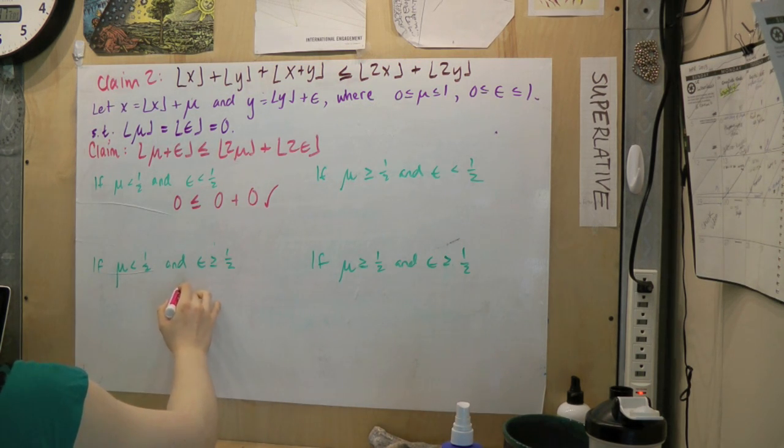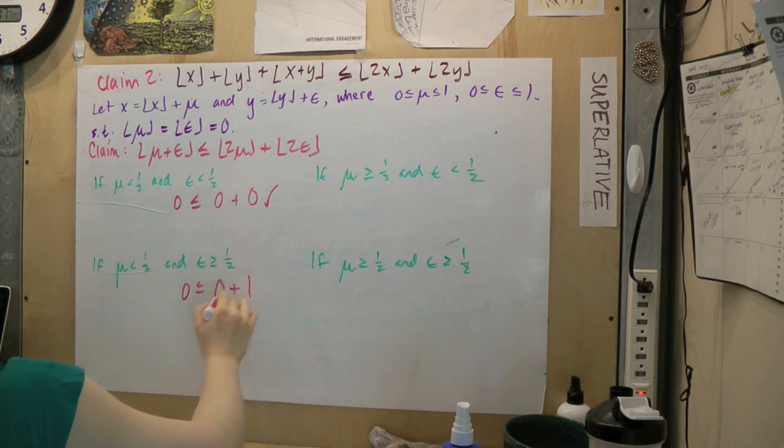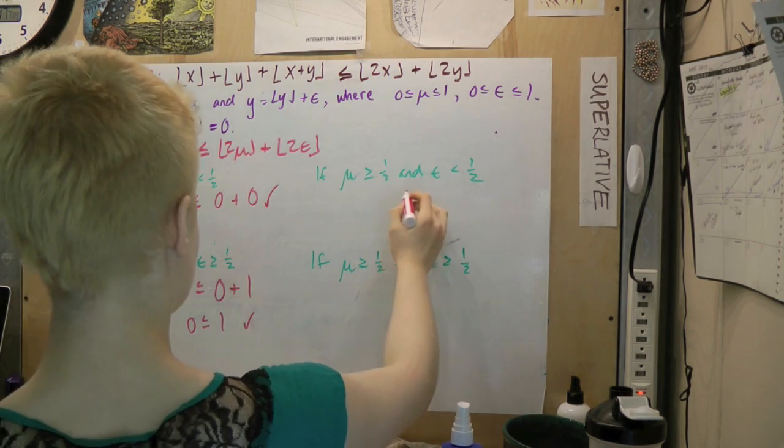In the second case, mu is less than 1 half and epsilon is greater than or equal to 1 half. Thus, the left side is 0 and the right is 0 plus 1. Awesome! Two for two!